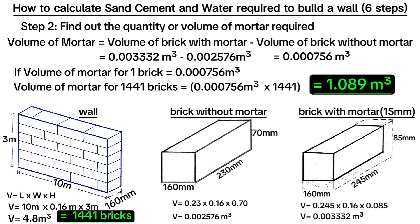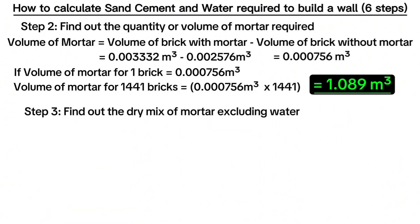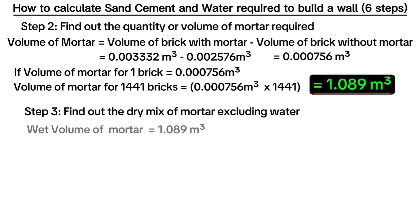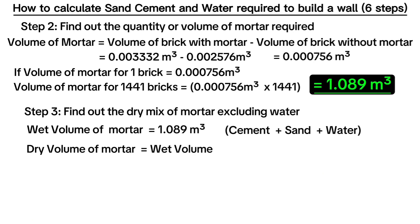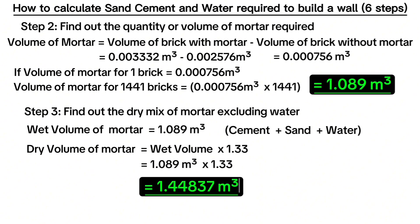Therefore, if you are purchasing ready-mix mortar, you order 1.089 cubic meters to be delivered to you on site. When you are preparing it by yourself, it brings us to the third step. The third step is to find out the dry mix of the mortar excluding water. Dry mix mortar means cement and sand, whereas wet mix mortar means cement, sand and water. We have 1.089 cubic meters of total wet mix volume. Dry volume of mortar is equal to wet volume multiplied by 1.33, which is treated as a safety factor or constant. Dry volume is therefore 1.089 meters cubed multiplied by 1.33 to get 1.44837 meters cubed.